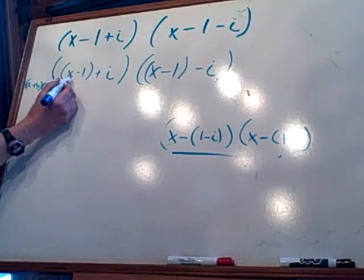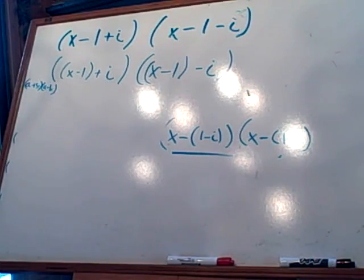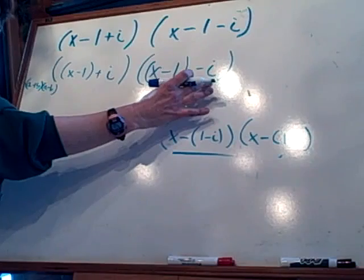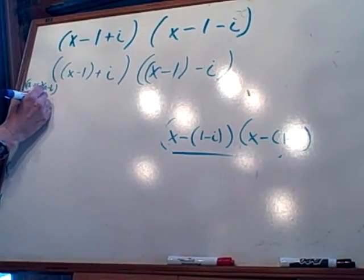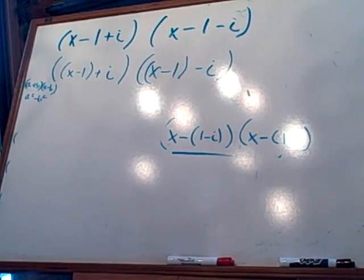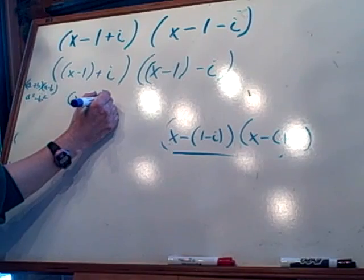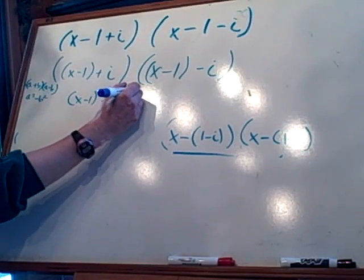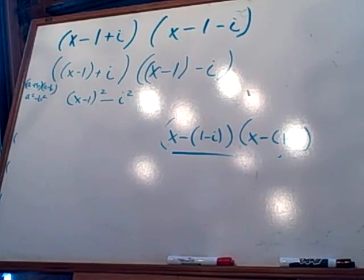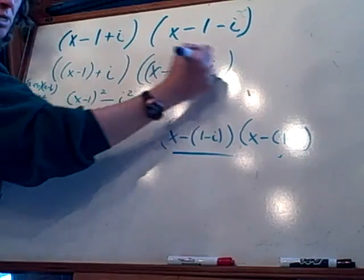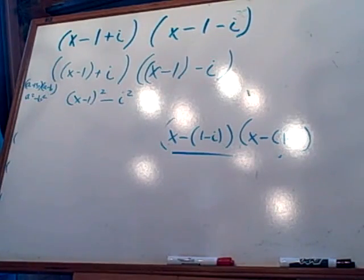Now that should look somewhat similar to a plus b times a minus b. My a being the x minus 1, my b being the i. So it's in the form of a plus b, a minus b. So I can write it as a square minus b square. Cool, huh? Now that's algebra. So we can write it as x minus 1 quantity squared minus i squared. Now you are going to want to remember this because you have to know that little trick and rearrangement in order to get this right the next time.